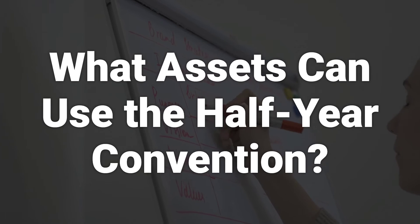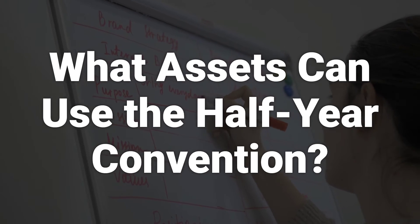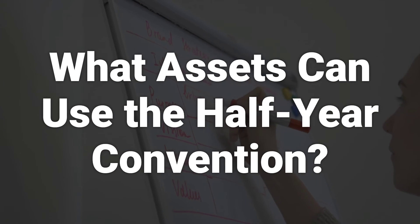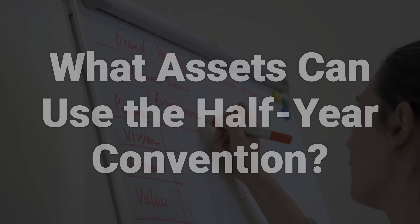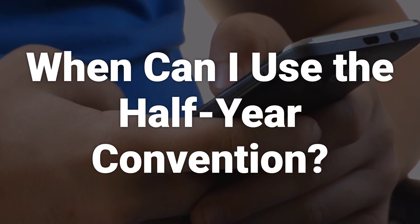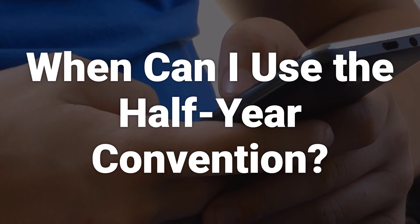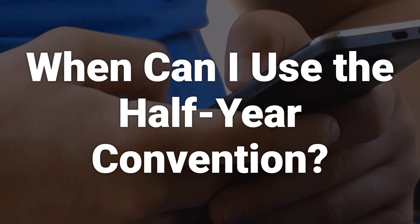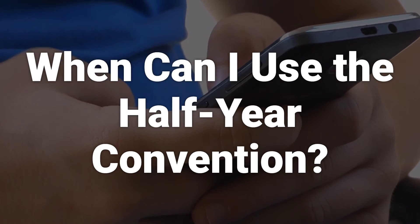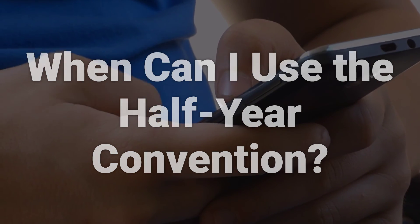The half-year convention can be applied to all property except residential rental property, non-residential real property, railroad gratings, and tunnel bores, unless the mid-quarter convention applies. The half-year convention can be used if the mid-quarter convention does not apply, which occurs if the aggregate basis of property placed in service during the last three months of the tax year exceeds 40% of the aggregate basis of all property placed in service during the tax year.